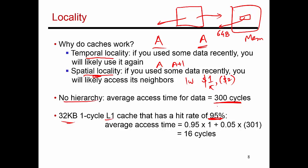With the 95% hit rate, what does my average latency for a load become? I said that without a hierarchy, your load latency is roughly 300 cycles. Turns out that with a cache, you can bring that latency all the way down to 16 cycles.